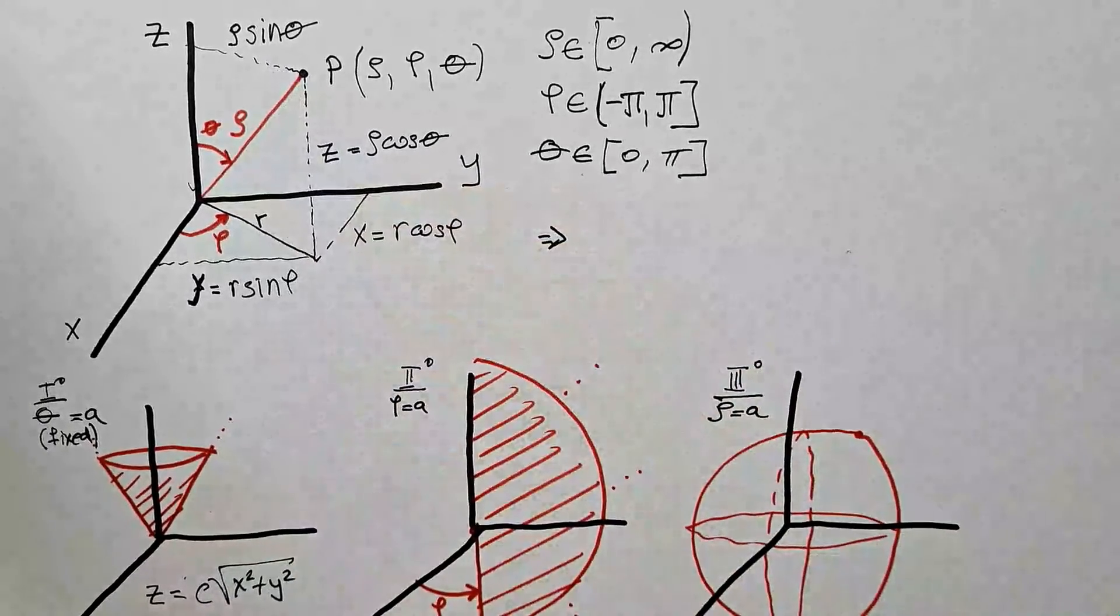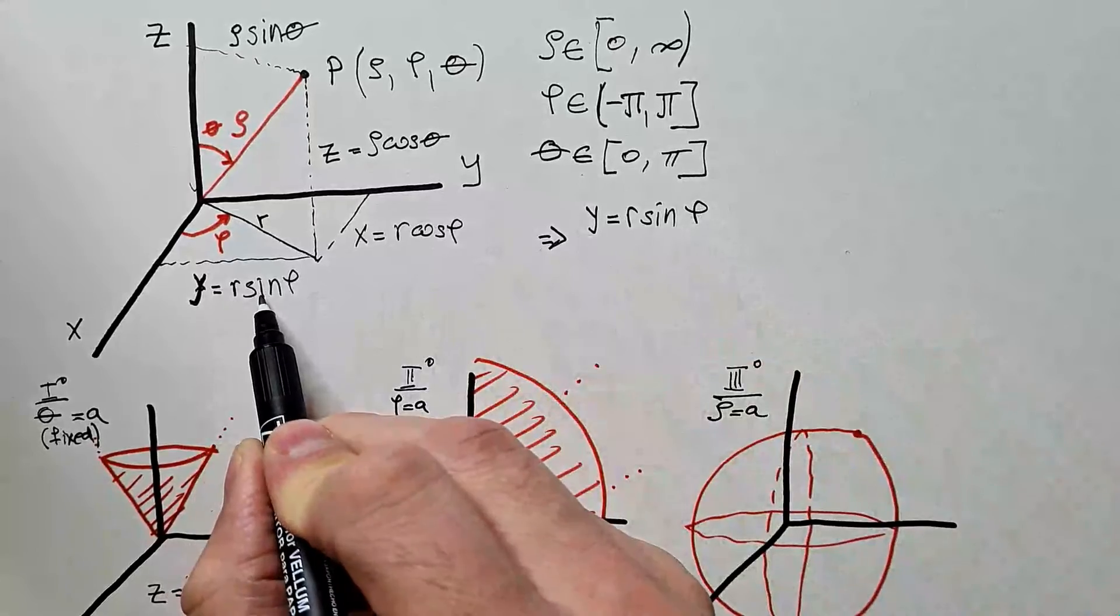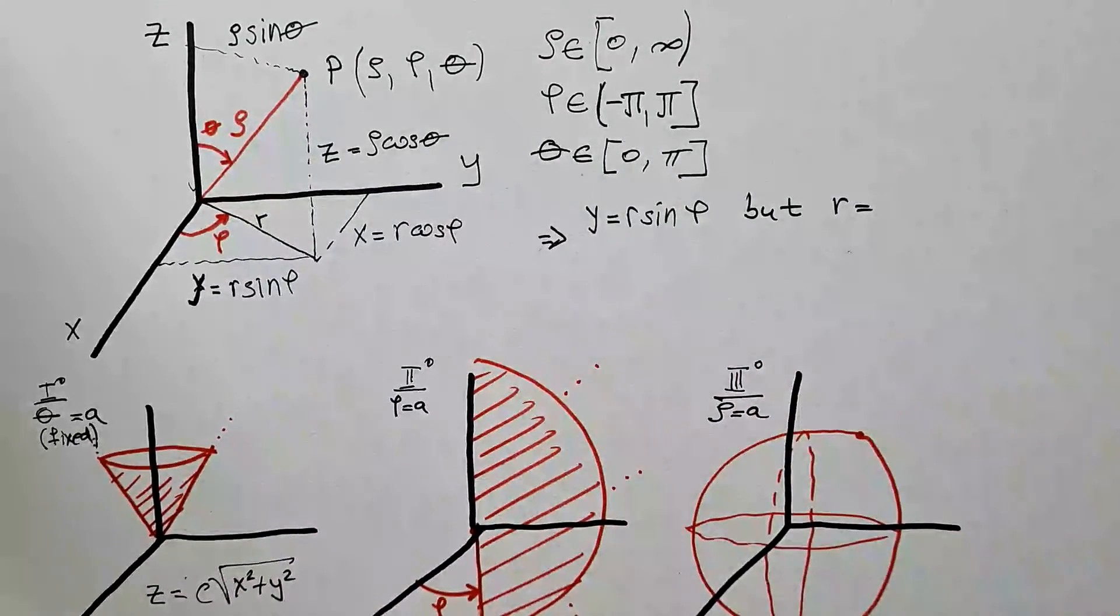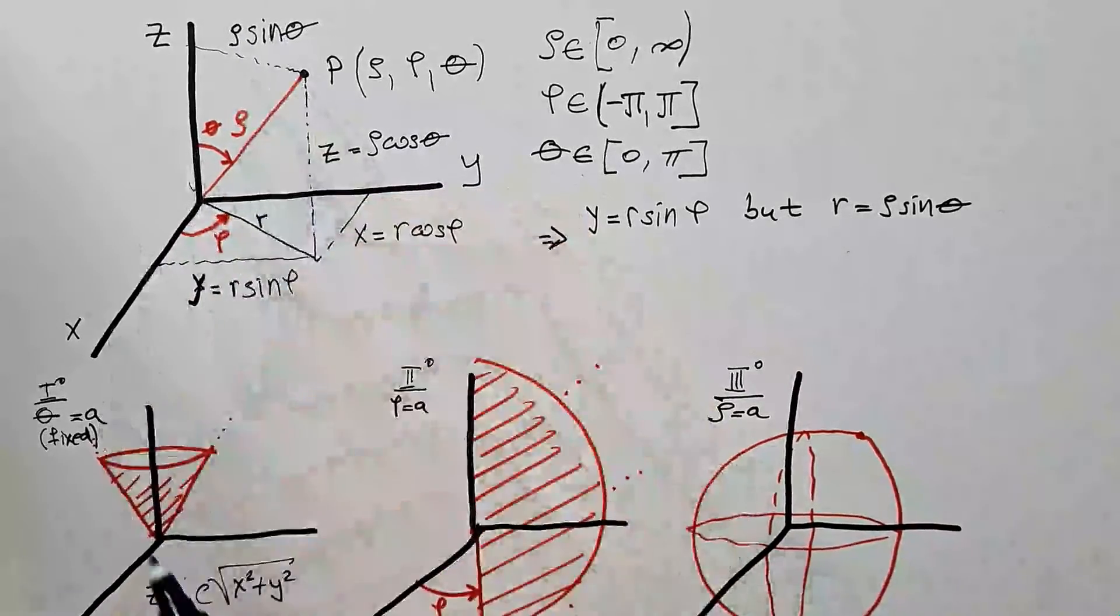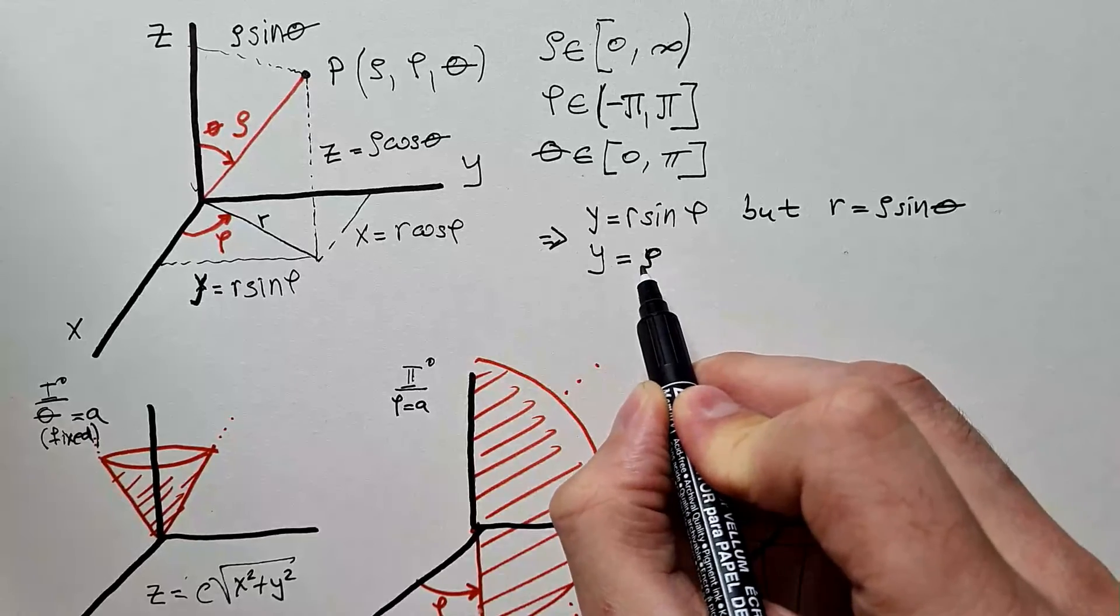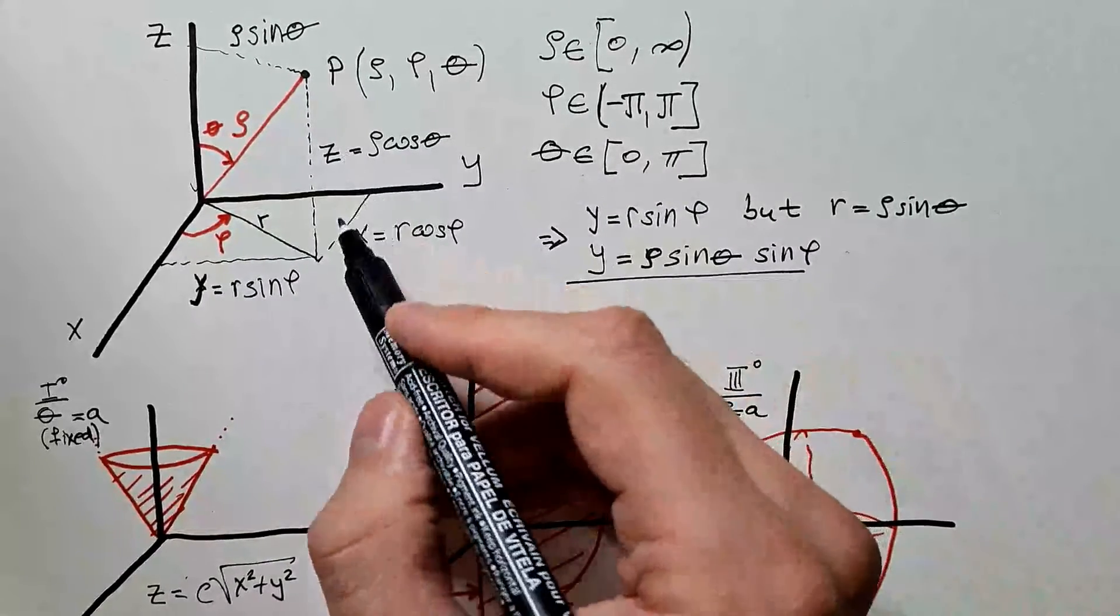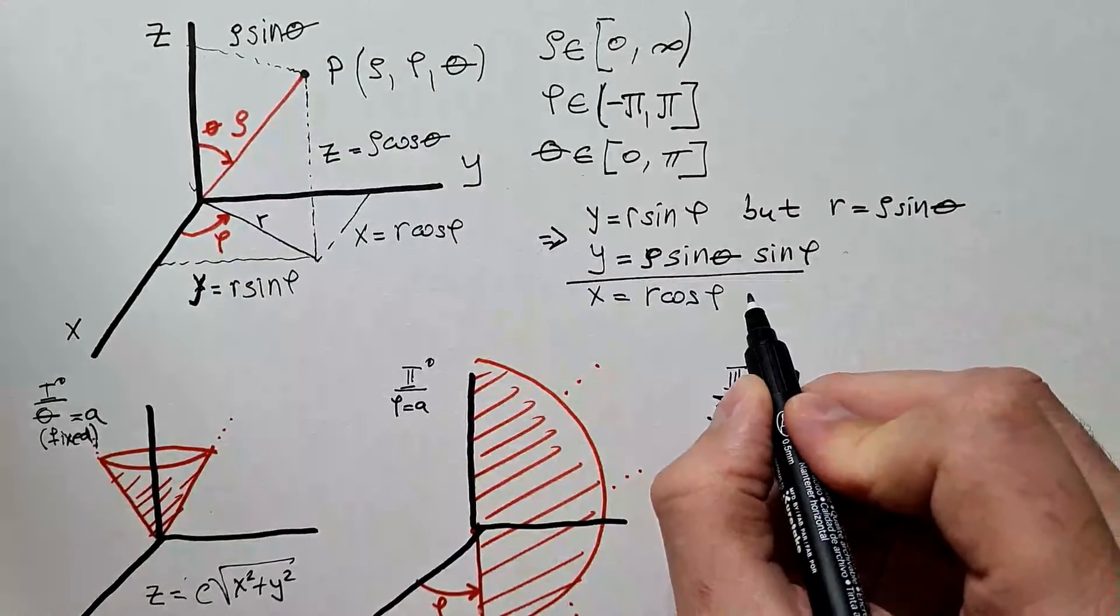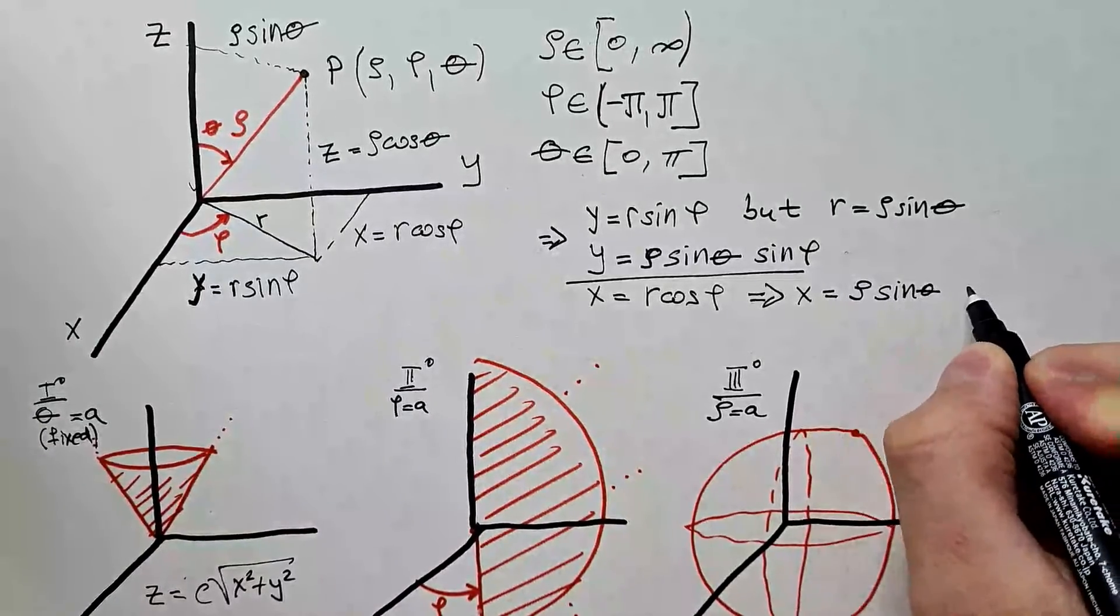So, from this figure and this reasoning, we can see that y is r sine phi. But r is rho sine theta. Therefore, y is rho sine theta sine phi. Similarly, we have that x is equal r cosine phi, but r is rho sine theta cosine phi.